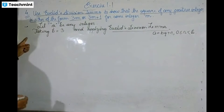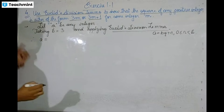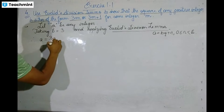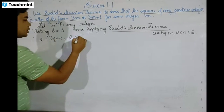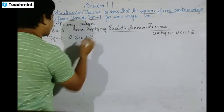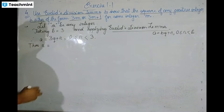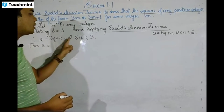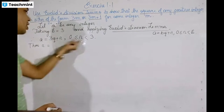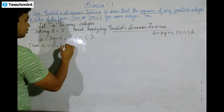Therefore, A is equal to 3Q plus R, where 0 is less than or equal to R, which must be less than 3. So the values of R will be 0, 1, or 2.